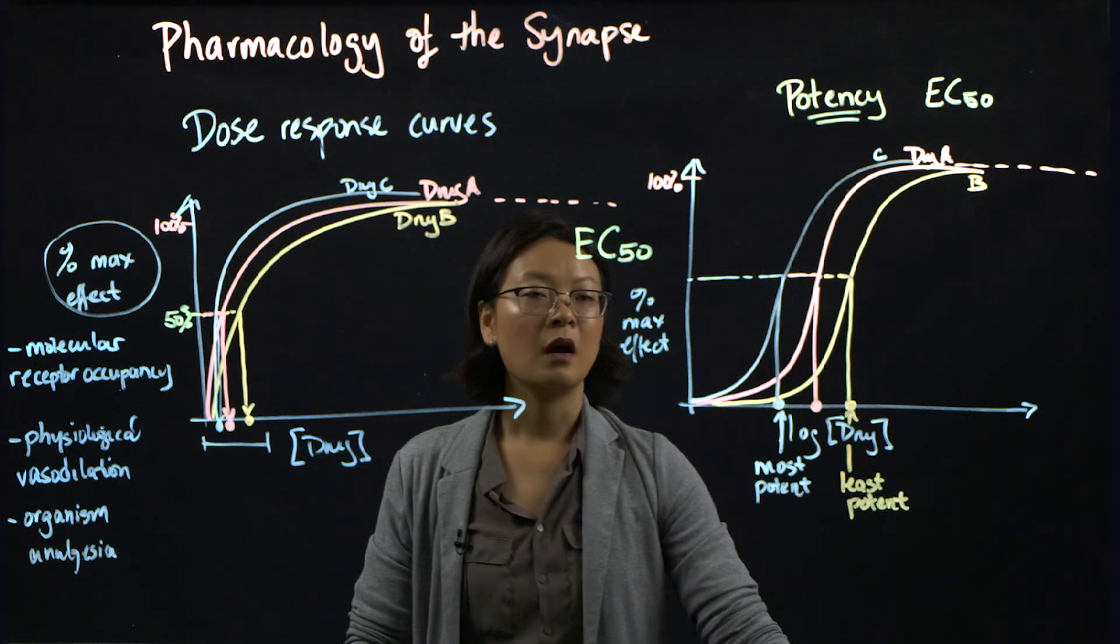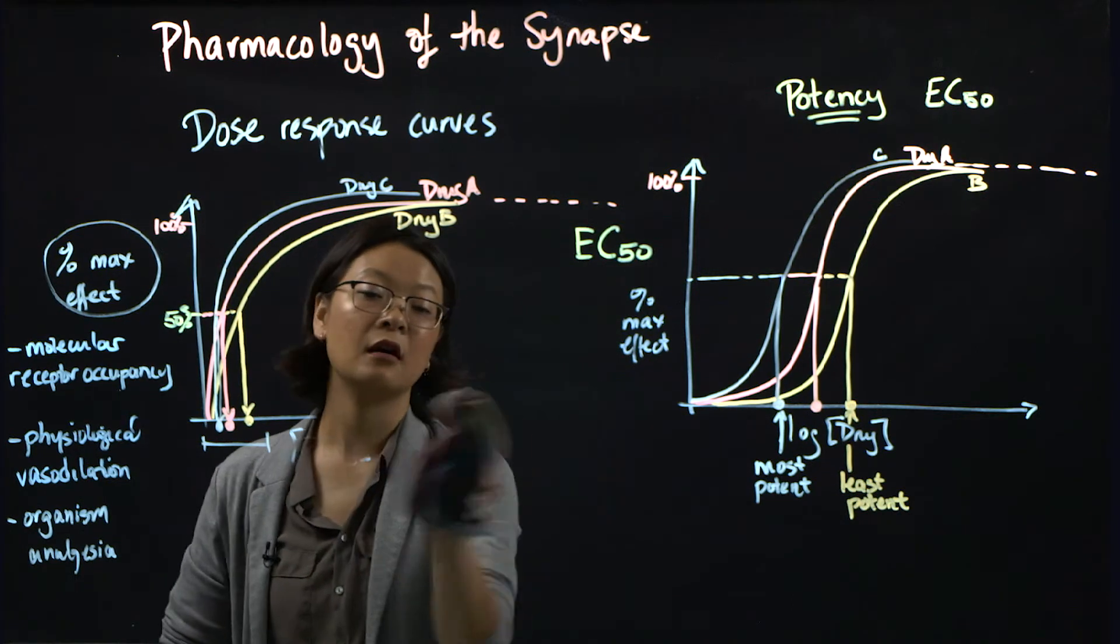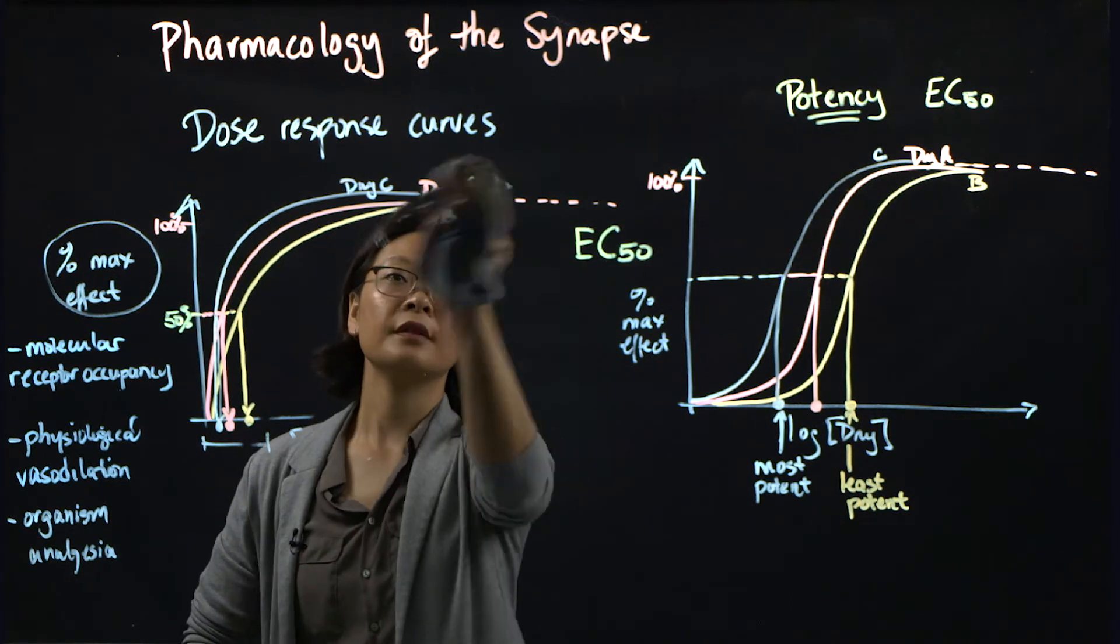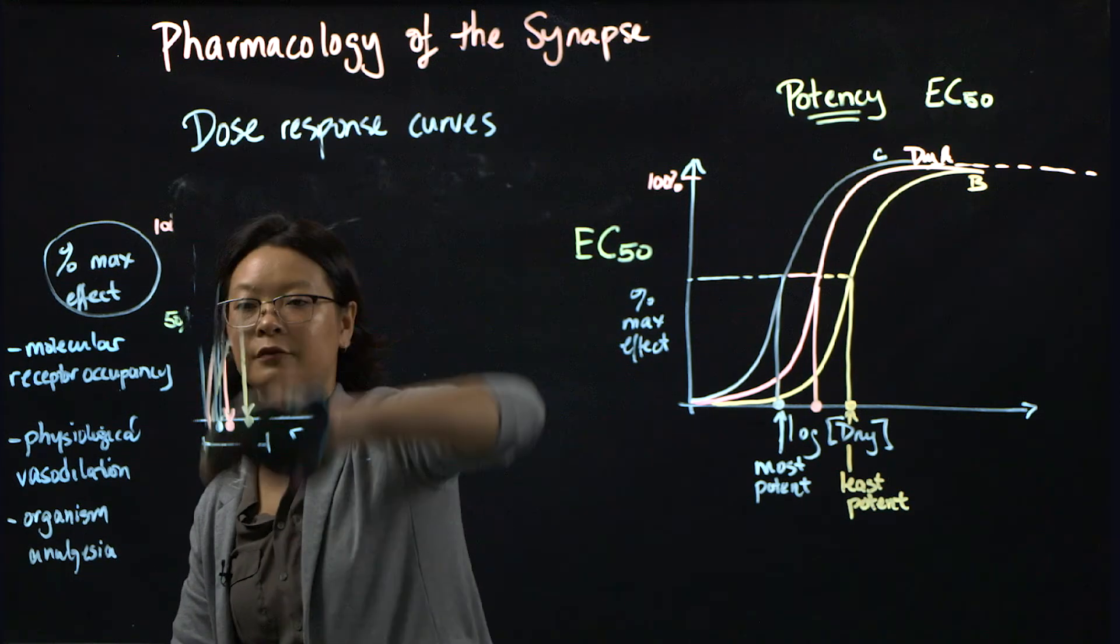So why is potency measured from EC50 and not EC100? Well, there's a couple of major, let me just erase this to get more room.